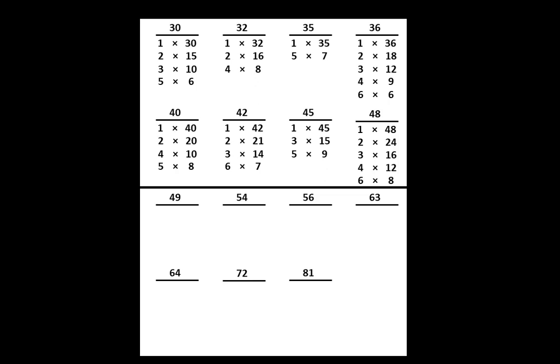Let's begin with the number 49. On your paper, write that we can think of 49 as 1 times 49 or 7 times 7. Those are all the factor pairs of 49.